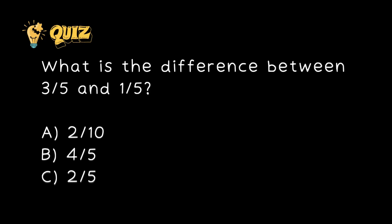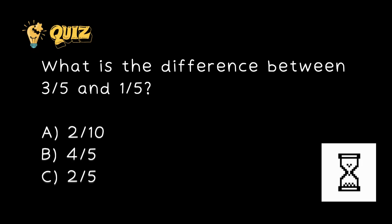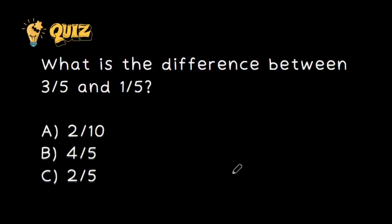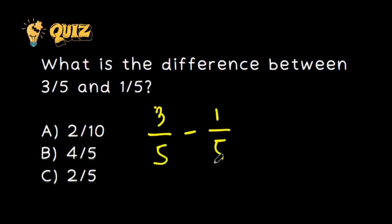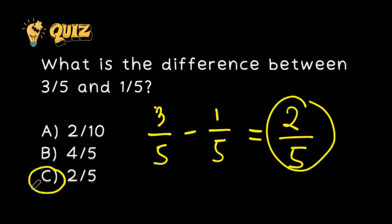Think about it and I'll reveal the correct answer soon. Time's up! Let's find the difference between 3 over 5 and 1 over 5. Step one: subtract the fractions. To find the difference, we simply subtract the second fraction from the first one. So here is the calculation: 3 over 5 minus 1 over 5 equals 2 over 5. The difference between 3 over 5 and 1 over 5 is 2 over 5. The correct answer is letter C.